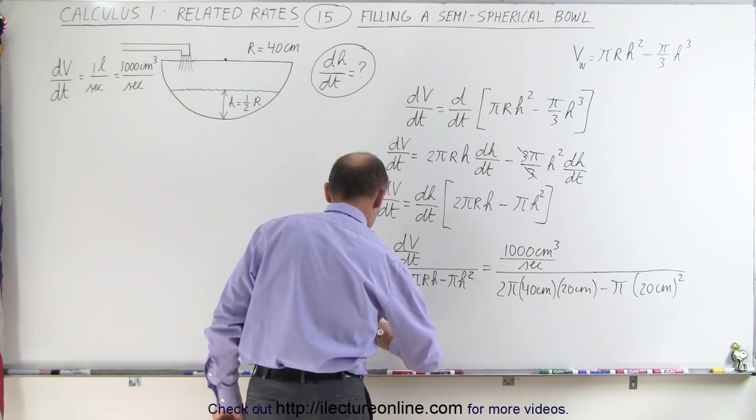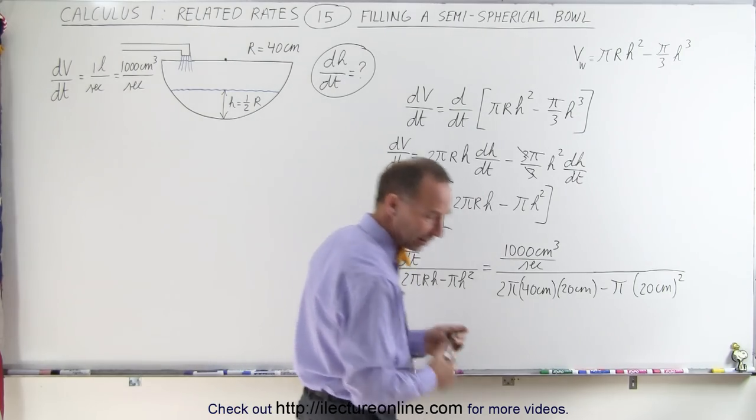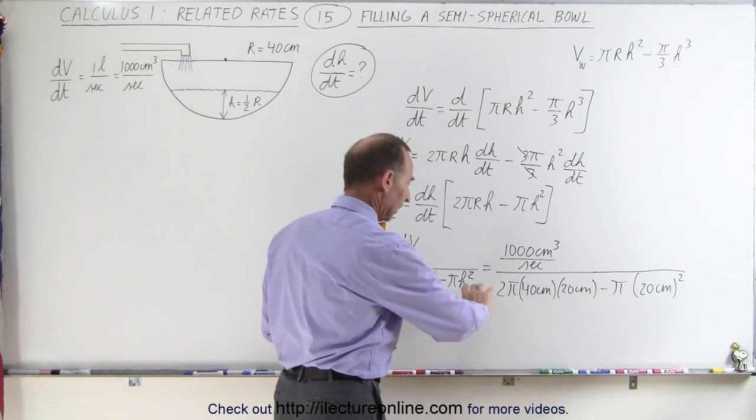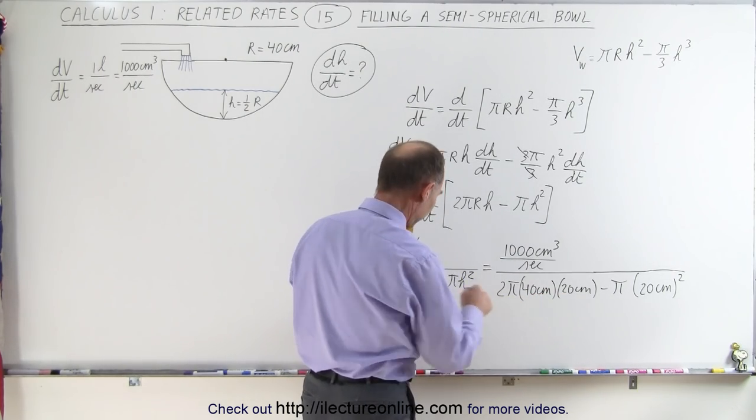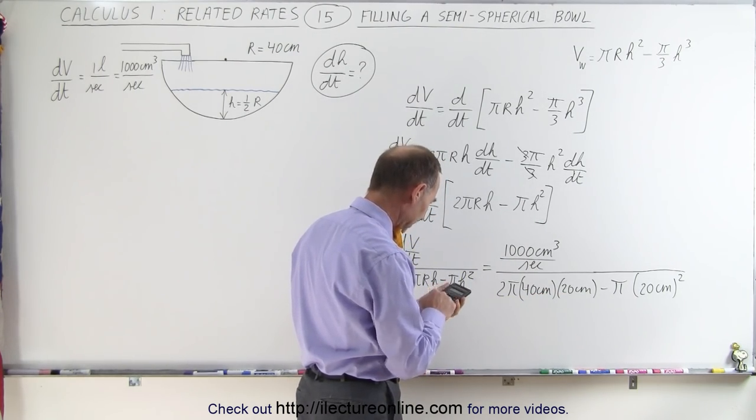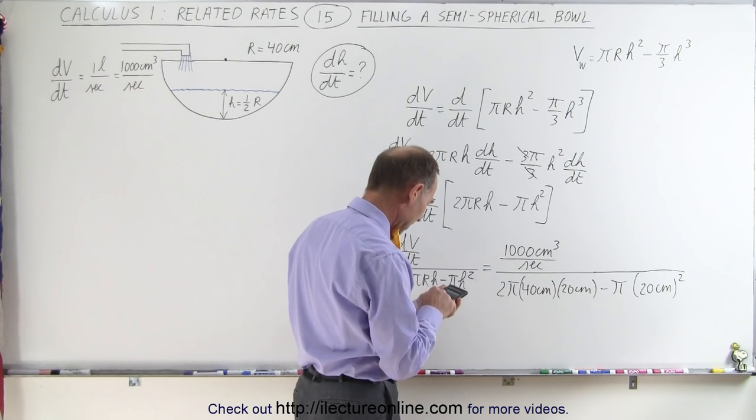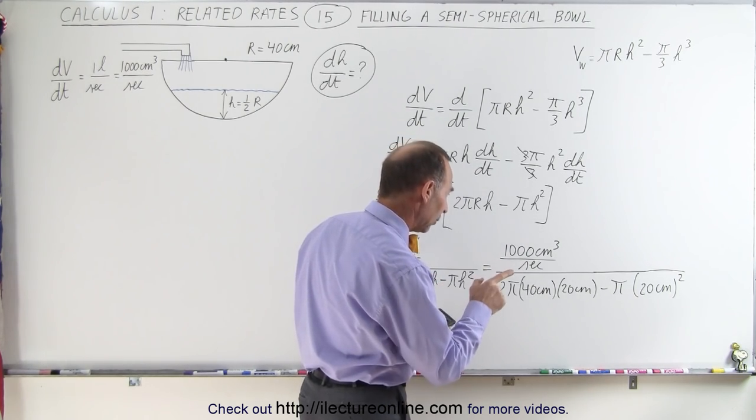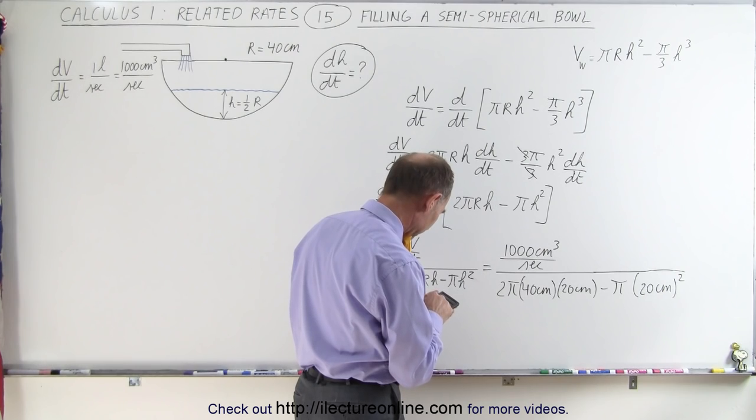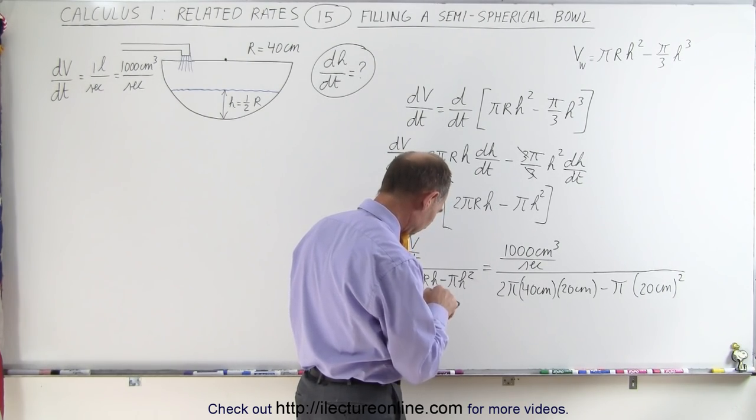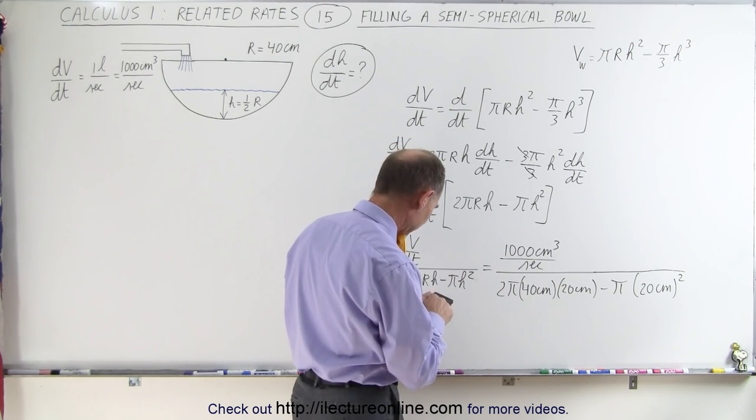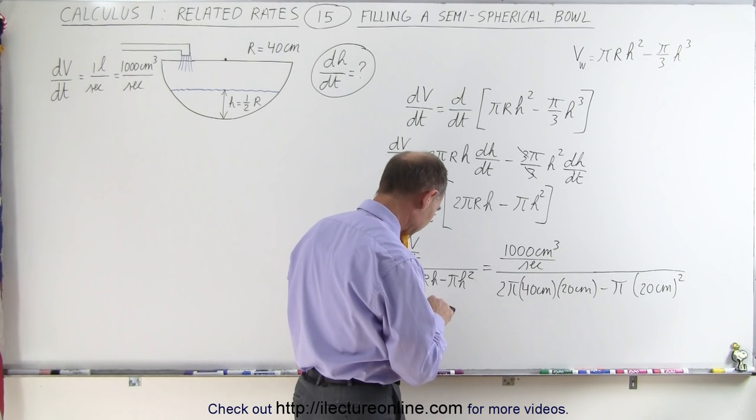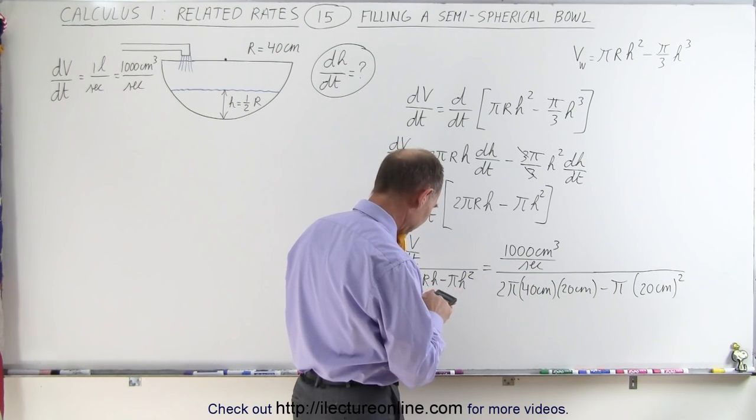dh dt will then be, now we're going to need a calculator. I'm going to start with the denominator first, that's 800 times 2, that's 1600 times pi, minus, that would be 400 times pi, 400 times pi equals, now we'll bring that to the numerator by taking the inverse of that, and then we'll multiply it times 1,000.